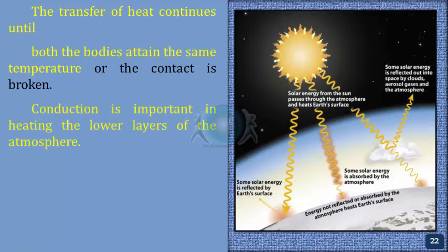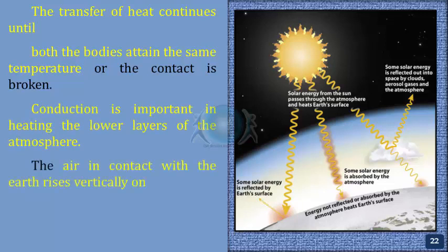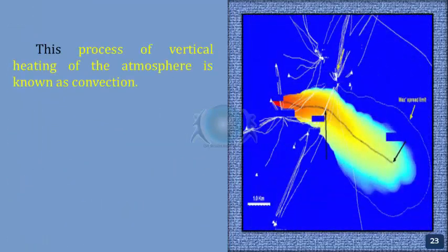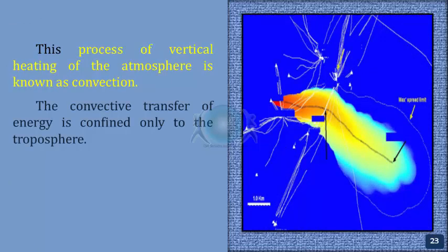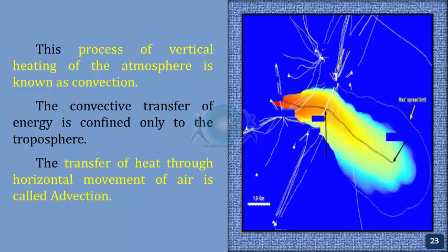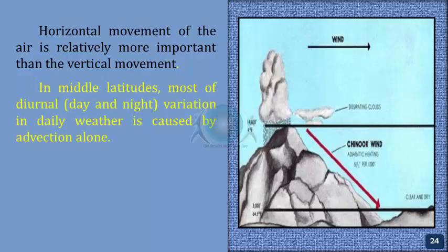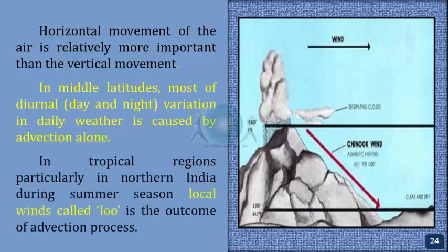Conduction is important in heating the lower layers of the atmosphere. The air in contact with the Earth rises vertically on heating in the form of currents and further transmits heat to the atmosphere. This process of vertical heating is known as convection, which is confined only to the troposphere. The transfer of heat through horizontal movement of air is called advection. In middle latitudes, most diurnal variation in daily weather is caused by advection alone. In tropical regions, particularly in northern India during summer, local winds called Loo are the outcome of advection processes.